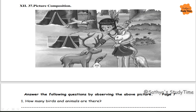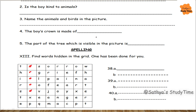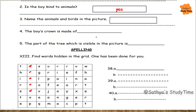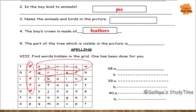Next, picture composition — see the picture carefully and answer the questions. How many birds and animals are there? Here you can see six. Is the boy kind to animals? Yes. Name the animals and birds in the picture. The boy's crown is made of feathers. The part of the tree which is visible in the picture is the bark — or you can write only the bottom part. Find the words hidden in the grid: greed, sorrow, grief, pain, fear, anger, joy, hate.